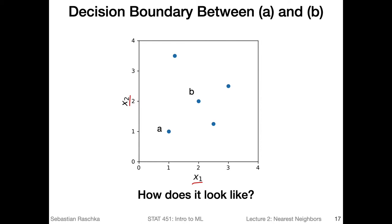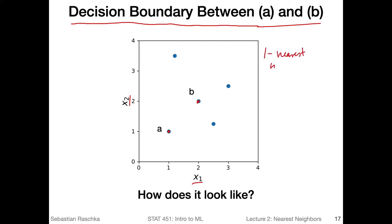In this dataset, we have five data points — the blue dots here. Let's just focus in on A and B. We are particularly interested in the decision boundary between A and B. So if you fit a one nearest neighbor model given the dataset, what would the decision boundary between A and B look like?